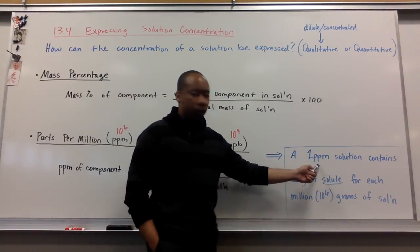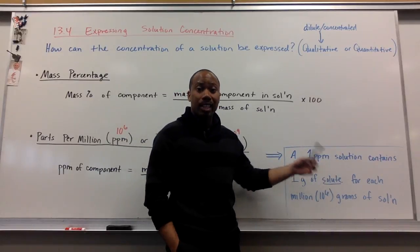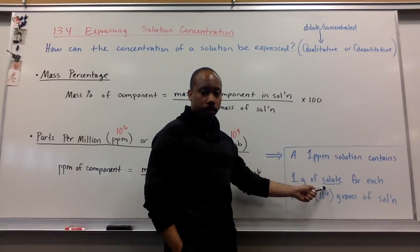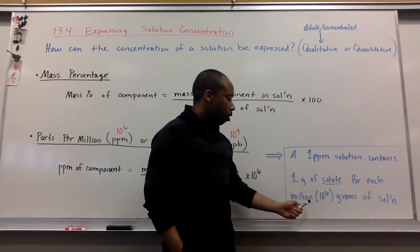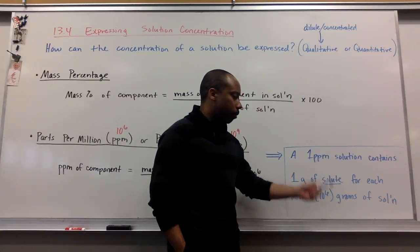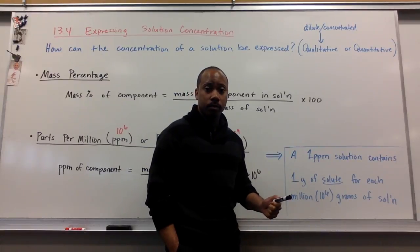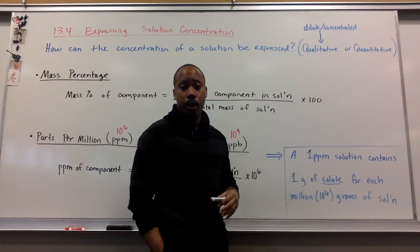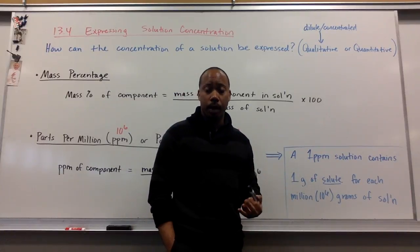For a one part per million solution, it contains one gram of solute for each one million grams of solution, and one million is 10 to the 6th. For parts per billion, it will be one gram for every 10 to the 9th grams or a billion grams of solution.